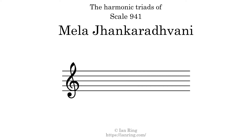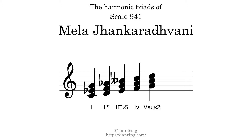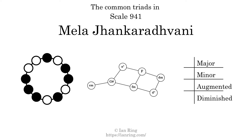Here are the harmonic triads present in this scale. The diagram in the center is a graph of parsimonious voice leading between triads. There are two major triads, three minor triads, no augmented triads, and two diminished triads. Here is a Hamiltonian path of parsimonious voice leading that uses all the triads.